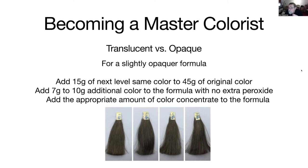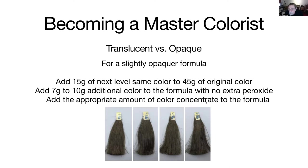Perry asked if I have a preference — concentrate versus adding the next deeper color. What I used to do in the old days was add up to 15 grams of the next deeper level plus an equal amount of peroxide. Nowadays I've switched to color concentrate because it's pure tone and simply gives me a deeper version without any change to the color formula.